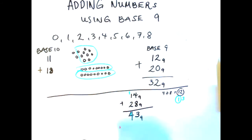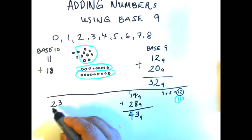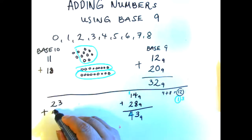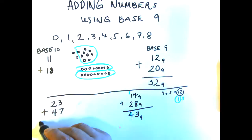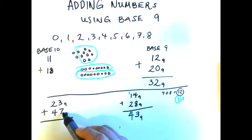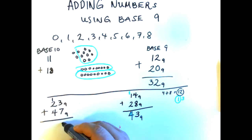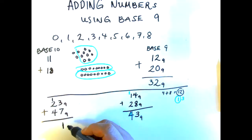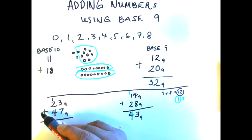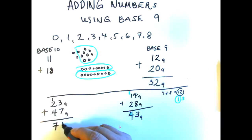Let's try another example: 23 plus 47, both in base 9. Add the ones: 3 plus 7 equals 10. How many groups of 9 in 10? That's 1 group of 9 with a remainder of 1. Then add the nines column: 1 carried plus 2 plus 4 equals 7 groups of 9. The answer is 71 in base 9.